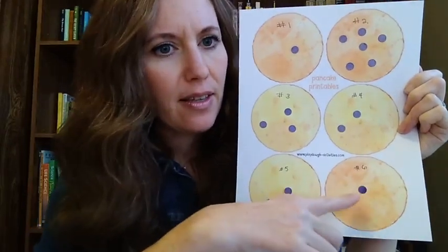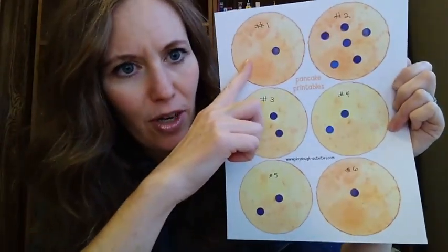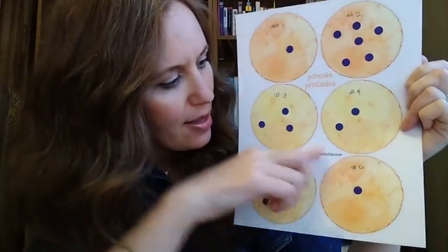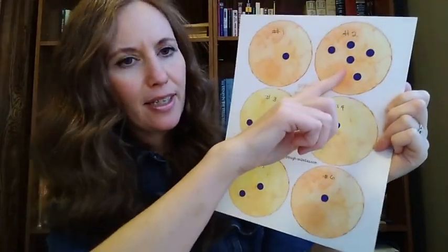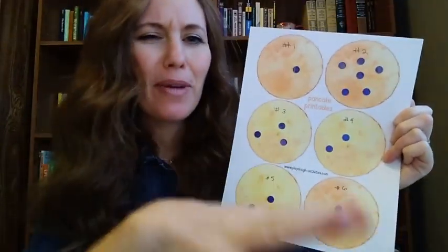Do we have any outliers? Outliers are results that don't seem to fit a pattern. First, let's see what the most common results are. This one had one and this one had one — so that happened twice — and then these two had two blueberries, so our most common was either one or two blueberries. Outliers are ones that don't seem to fit the pattern. I would say number two is kind of an outlier because it had quite a number more blueberries than the rest of them.